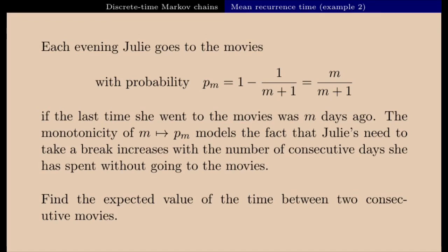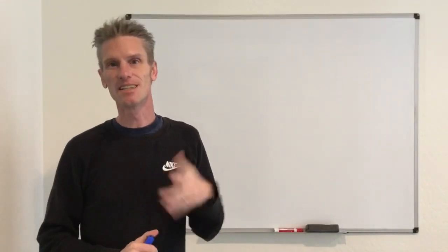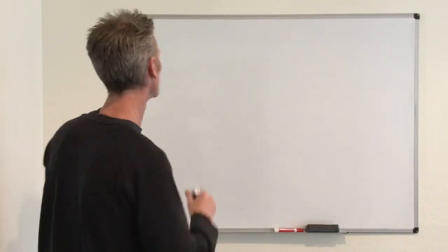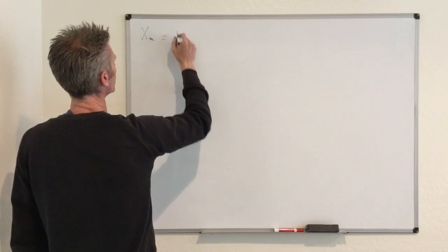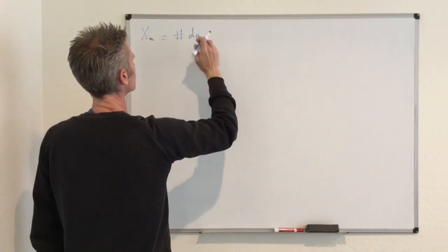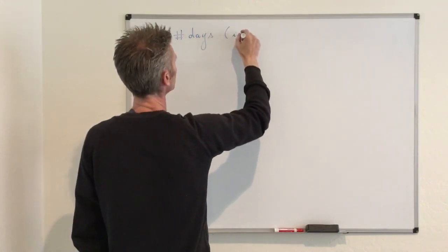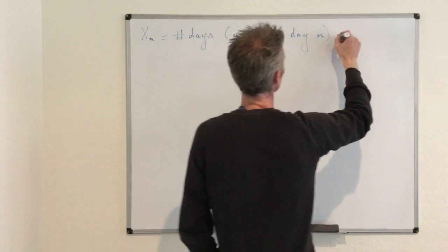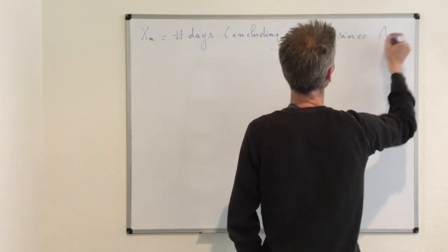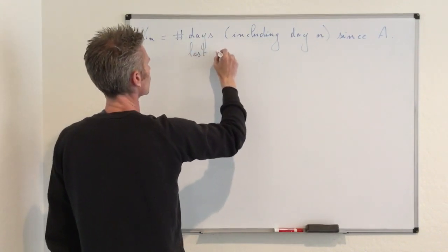The goal of this problem is to find the expected value of the time between two consecutive movies. It's clearly about finding some mean recurrence time, but we need to design a proper Markov chain to answer the question. To solve this problem, the Markov chain we need to consider this time is not completely natural. What is going to work is to define the following process: we call X_n the number of days, including day n, since Alice last watched a movie.